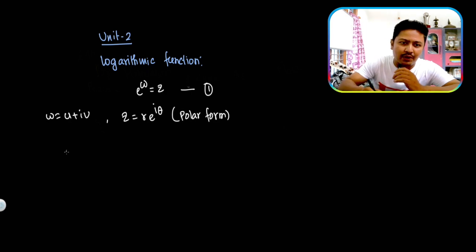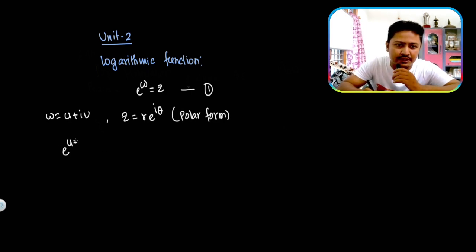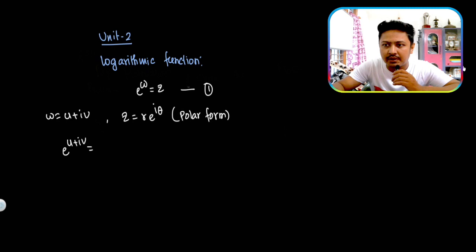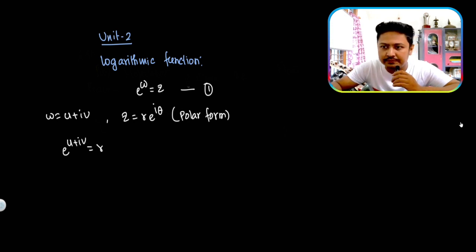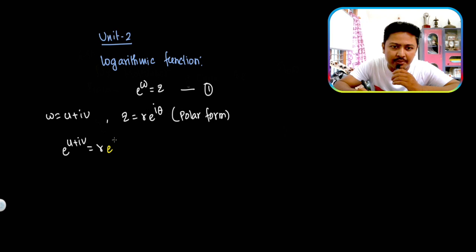Substitute into equation number 1. That means e to the power of u plus i·v equals R into e to the power i·theta.